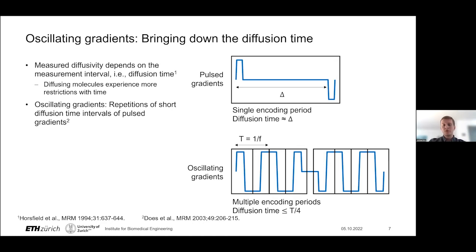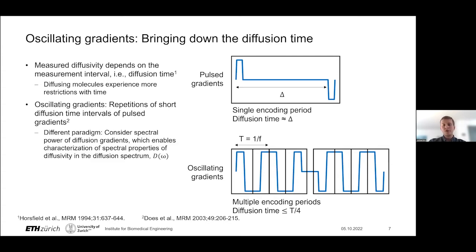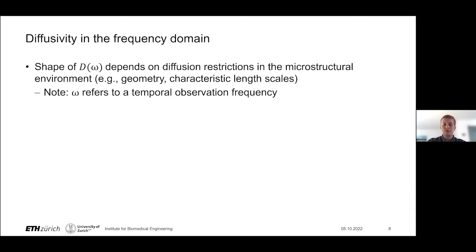It's worth noting that diffusion time is a construct designed to intuitively describe pulse gradients, but this intuition falls apart with oscillating gradients, which have a more complex modulation structure. When using oscillating gradients, it becomes more intuitive to consider a different paradigm: the spectral power of our diffusion gradients. This allows us to characterize the spectral dependence of diffusivity, rather than the diffusion spectrum D(ω). Frequency ω corresponds to a temporal observation frequency and should be understood as inversely proportional to diffusion time.